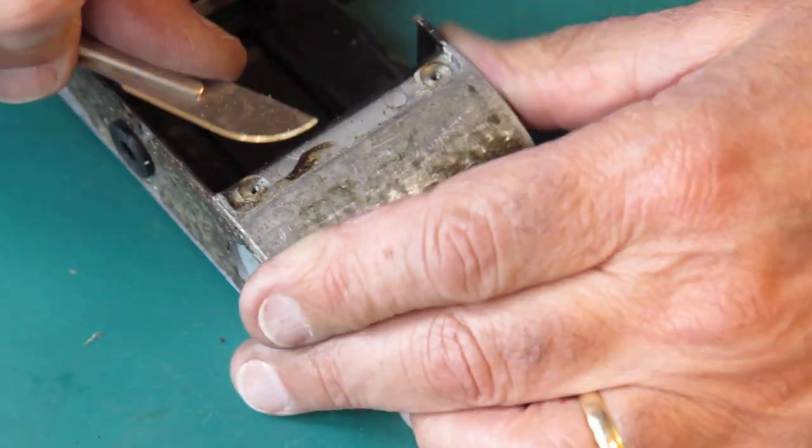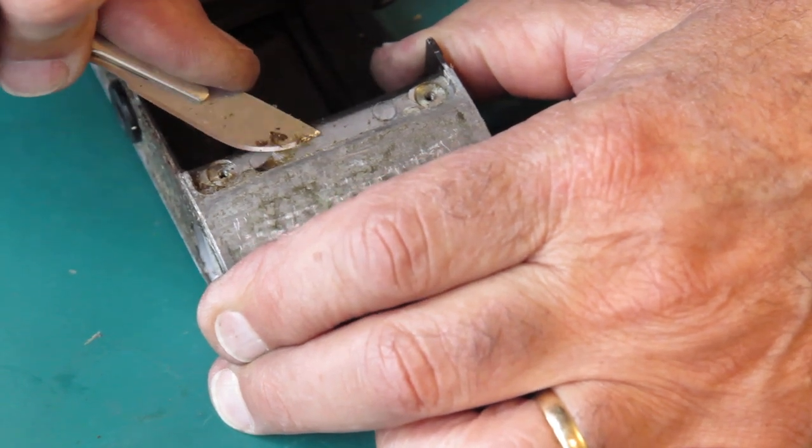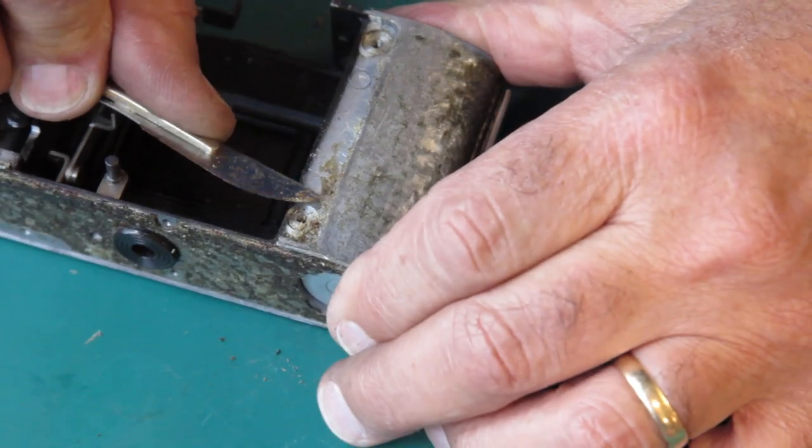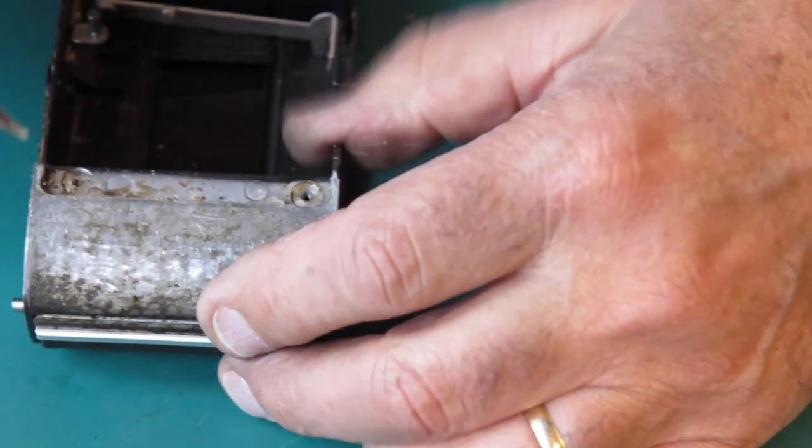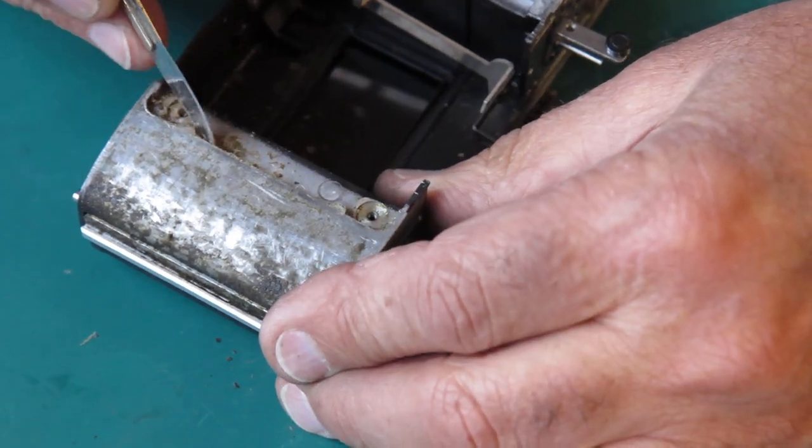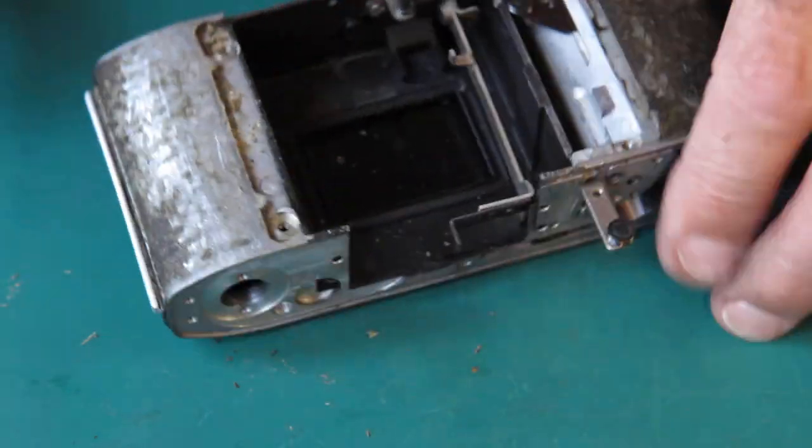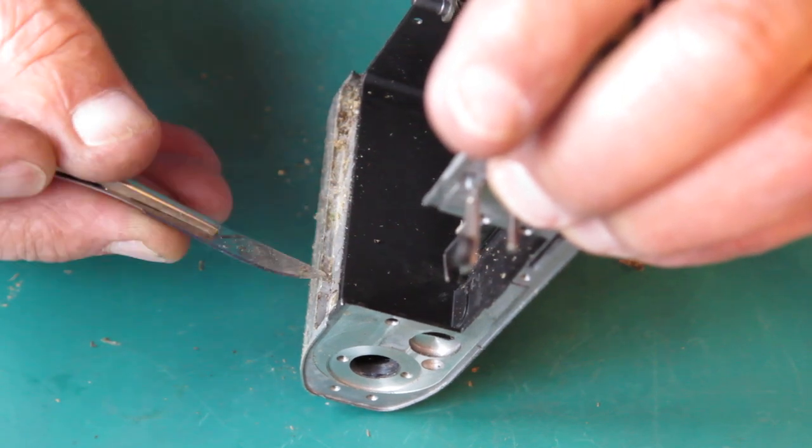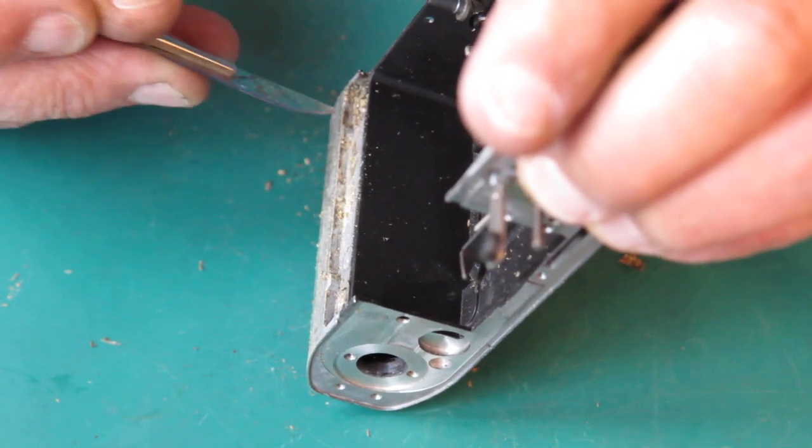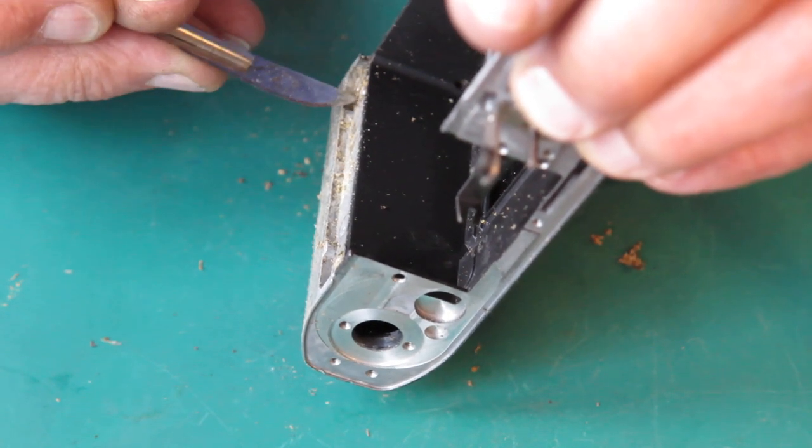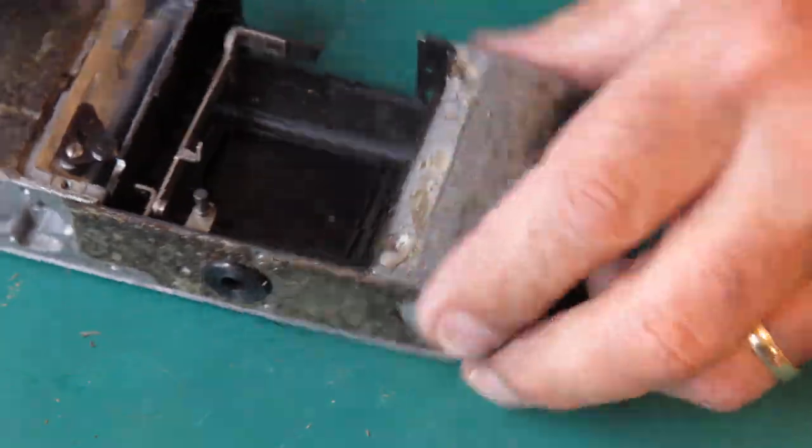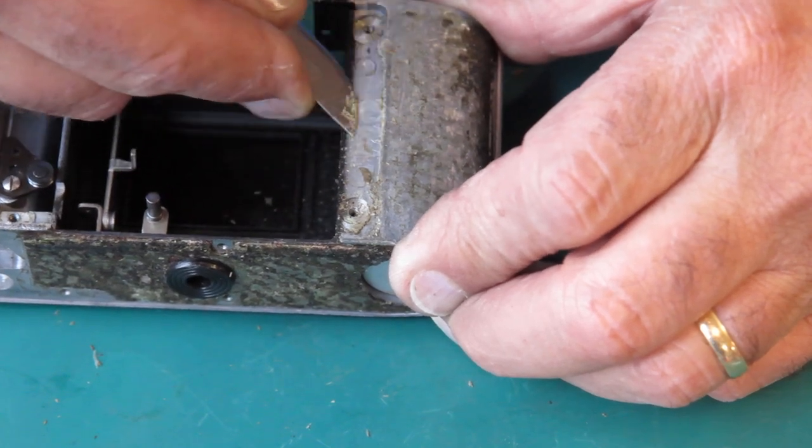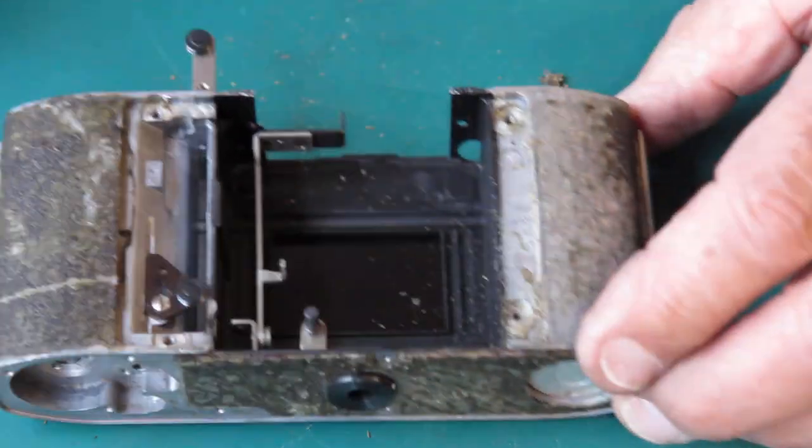Here the adhesive is running underneath the front plate. So what can you tell from a camera when you see it in this sort of condition? Well clearly it was someone's failed repair attempt just judging from the number of missing parts.